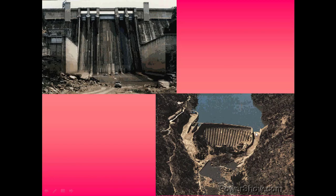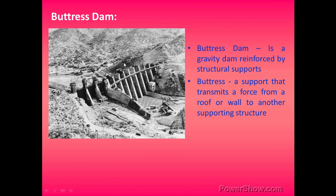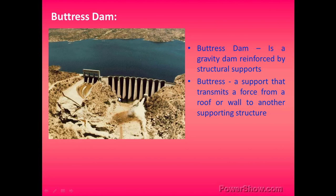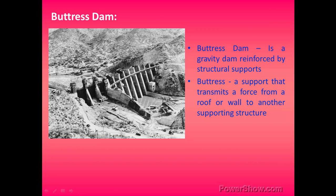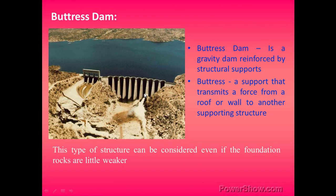These are some other examples of gravity dams. The next type is buttress dams. A buttress dam is a gravity dam reinforced by structural supports. As you can see in the figure, these structural supports are called buttresses. Buttresses are supports that transmit force from a roof or wall to another supporting structure. They transmit the load of the dam to the ground over a large surface area. This type of structure can be considered even if the foundation rocks are slightly weaker.